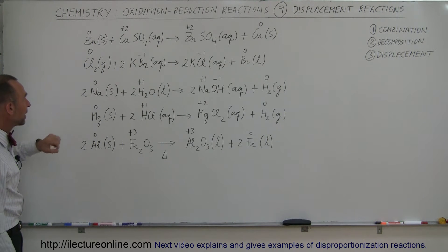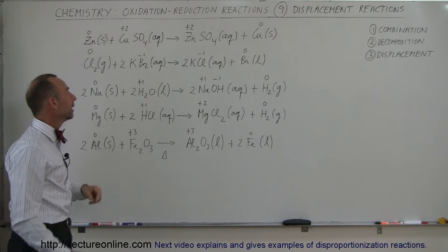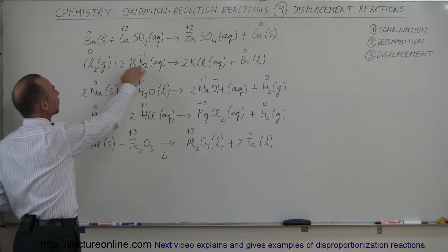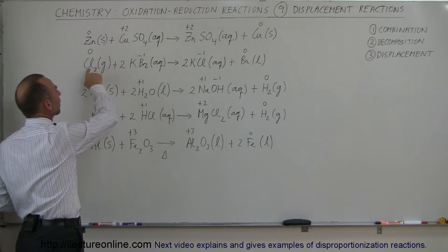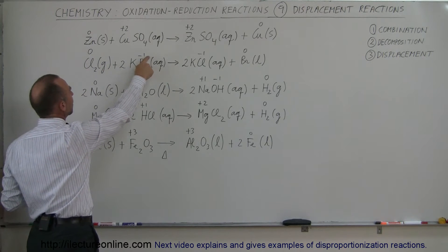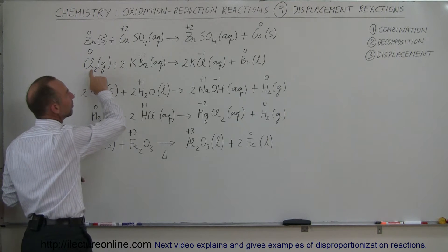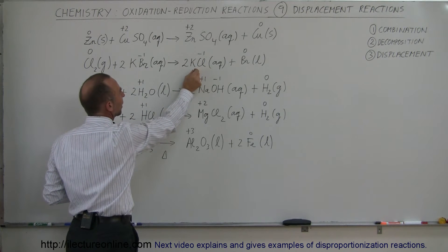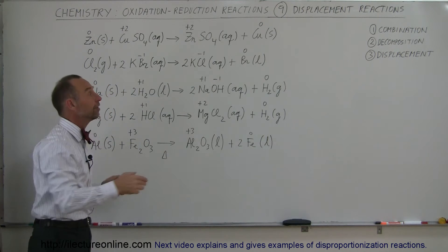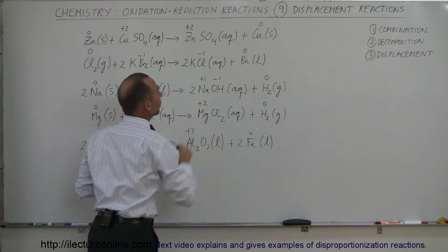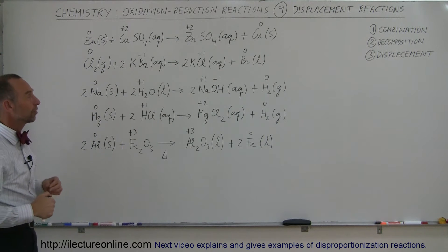In the next example, we have chlorine gas and potassium bromide. Notice that chlorine is more electronegative than bromine, so it's more likely to grab electrons. It's going to take the electron away from bromine, which then becomes negative — minus one — and will combine with potassium, which is positive. Therefore, bromine comes out as a liquid with an oxidation number of zero.